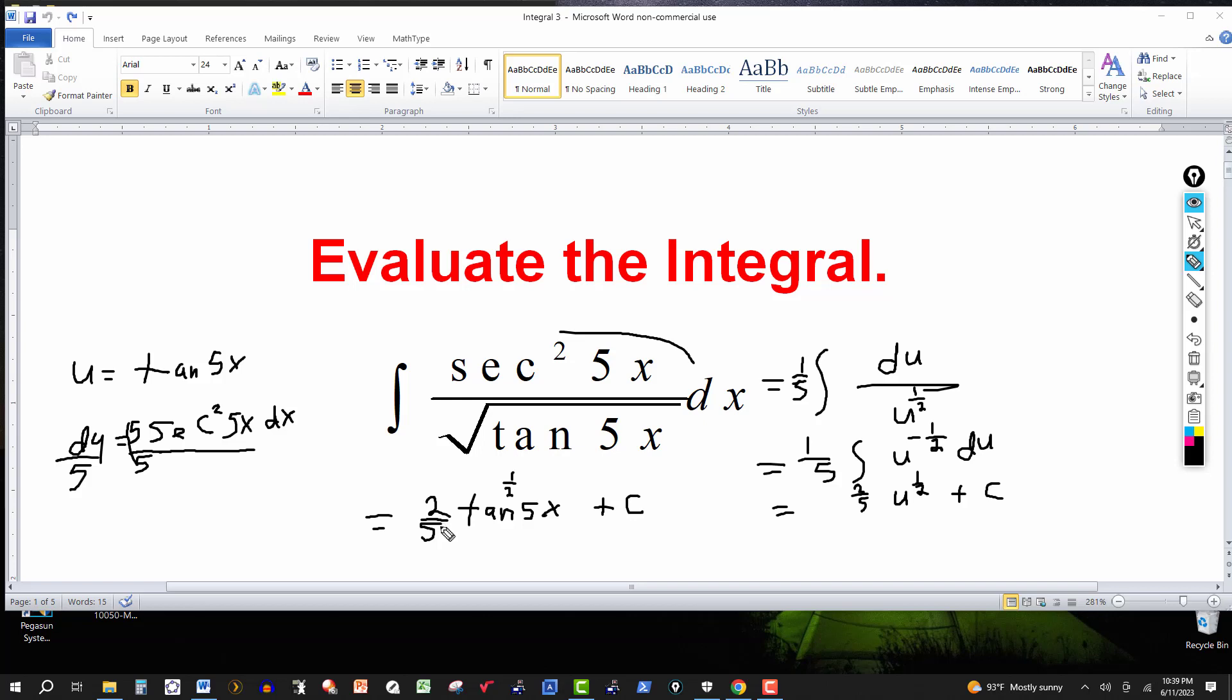So I have 2/5ths tangent to the 1/2 power of 5x plus C. I could put it right up here around the 2, the square root over that. I just leave it this way. Thanks for watching. We'll see you next time.